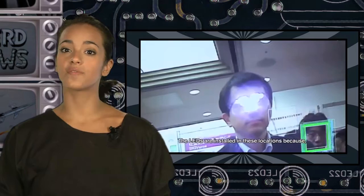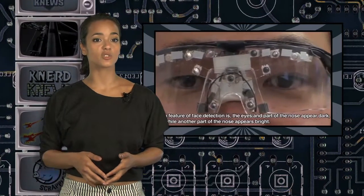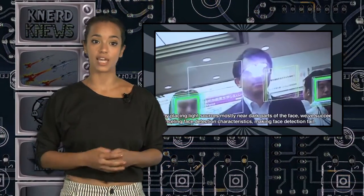Compared with previous ways of physically hiding the face, this technology can protect privacy without obstructing communication. Because this system utilizes the difference in spectral sensitivity between human vision and imaging devices, another method is needed for cameras that aren't affected by infrared light.